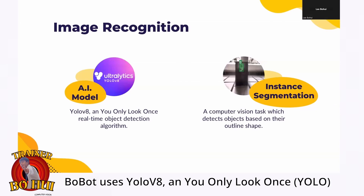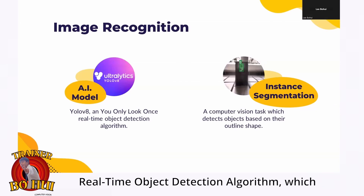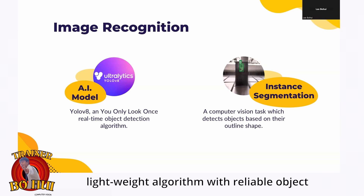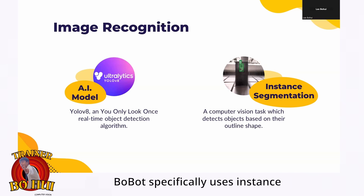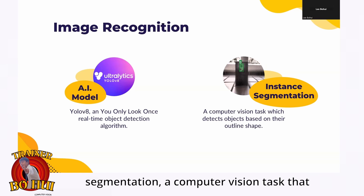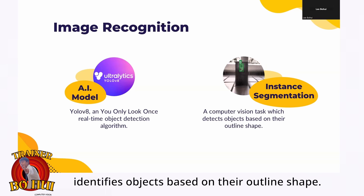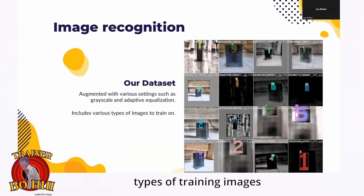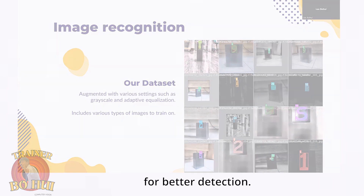The robot uses YOLO V8's real-time object detection algorithm, which provides fast response times while being a lightweight algorithm with reliable object detection. The robot specifically uses instance segmentation, a computer vision task that identifies objects based on their outline shape. To enable the robot to detect images in any environment, our dataset contains various types of training images and is augmented to enhance the outline shape of the object for better detection.